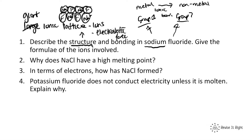For the formula of the ions involved: because sodium loses one electron and fluorine gains one electron, they react in a 1:1 ratio. Therefore the formula is NaF — one sodium and one fluorine. This covers the structure (giant ionic lattice), the bonding (electrostatic force), and because sodium is in group 1 and fluorine in group 7, the formula is NaF.